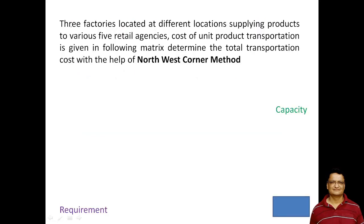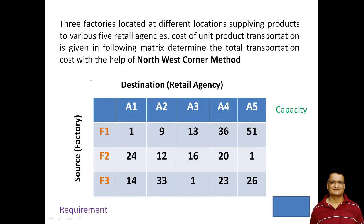There are three factories: F1, F2, and F3, located at three different locations, which supply products to five retail agencies. A1, A2, A3, A4, and A5 are the retail agencies which receive products from these source factories. So factories are the source and retail agencies are the destination.